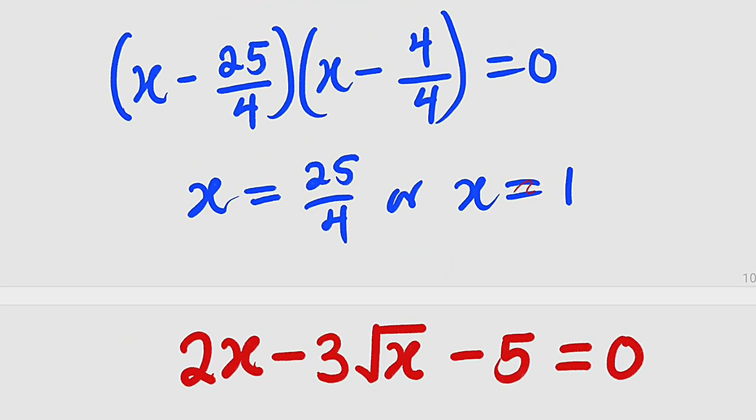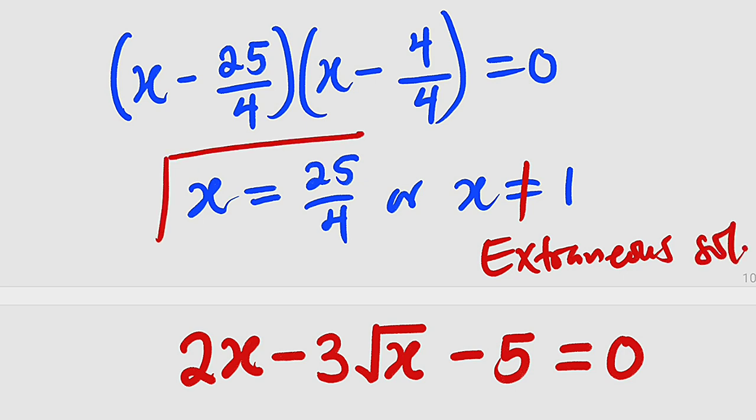Therefore, x equal to 1 is not a solution. We are going to discard this solution. And what do we consider this? An extraneous solution, right? It is an extraneous solution and hence we are going to consider only x equal to 25 divided by 4 as our valid solution.